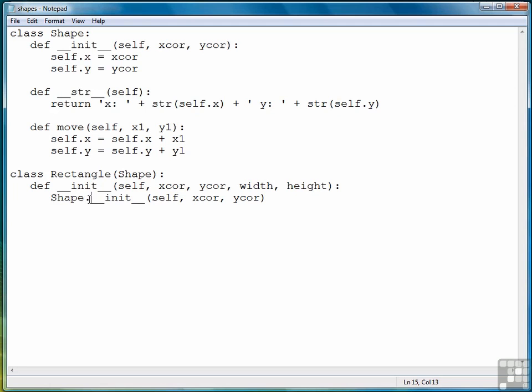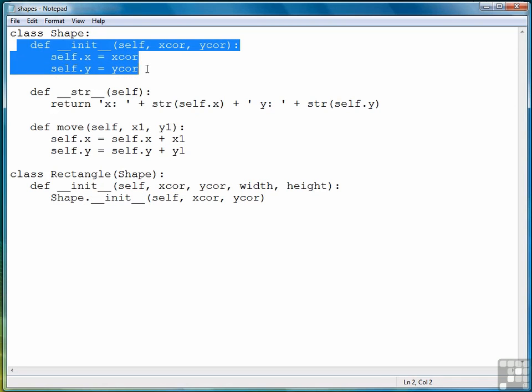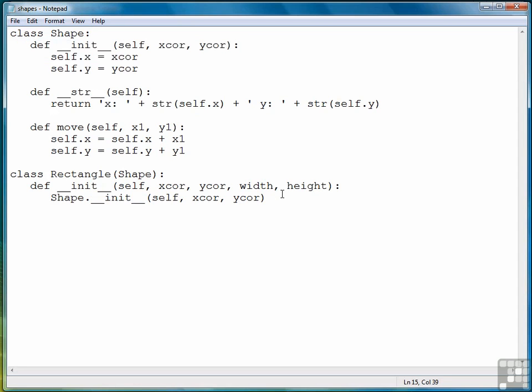And then the constructor for shapes, which looks just like that. And then once we're finished with those, then we're going to set the width and the height. So the only tricky part of this is calling the base class constructor, and it looks just like that.